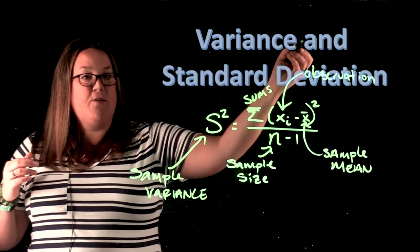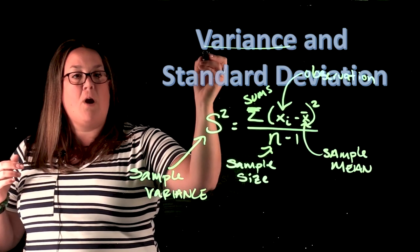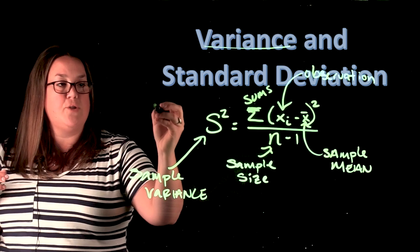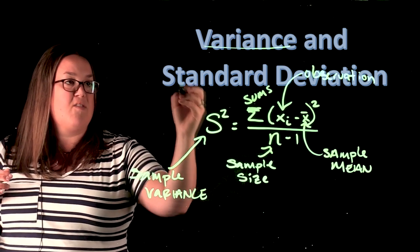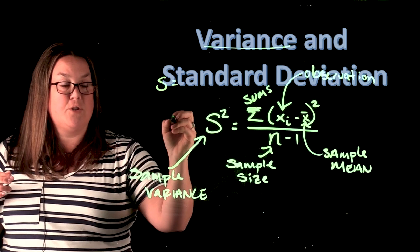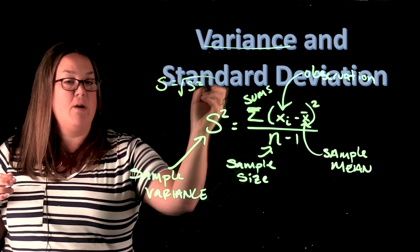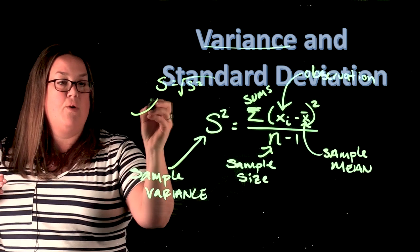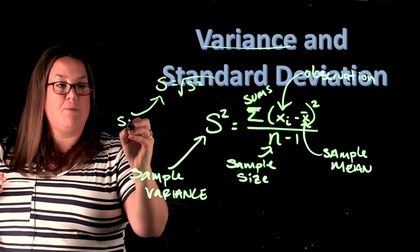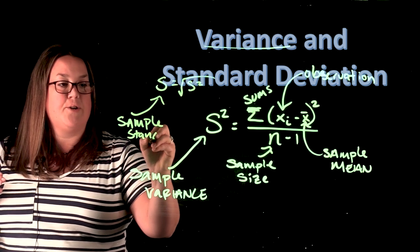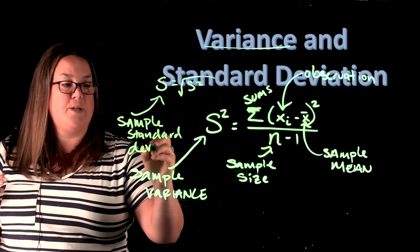And then that's the first part. So that's the variance part. But to get to standard deviation, all you actually have to do is to take the square root. So S is standard deviation for the sample. That would be just taking S squared and taking the square root. So that's going to be our sample standard deviation.